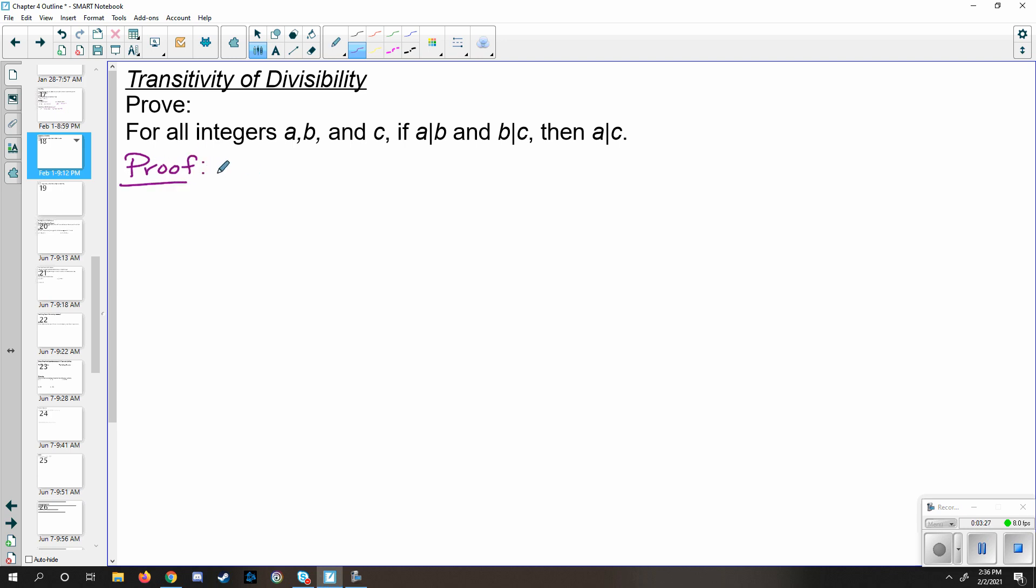So just like most other proofs about integers, you start out by making your hypothesis statement. So this time we have a little bit more to work with than if we were just trying to prove something about even or odd. So suppose we have integers a, b, and c such that a divides b and b divides c. So we're talking about integers a, b, and c that have to have this property that a divides b and b divides c. So that's our hypothesis, that's what we're working with here.